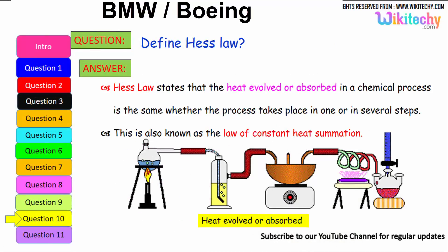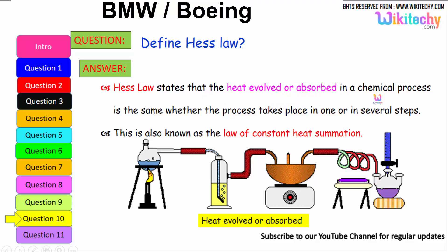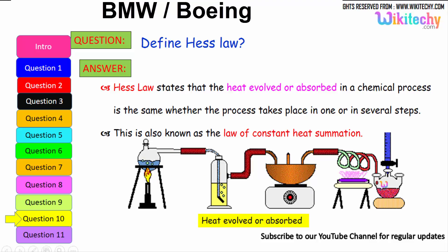Regarding heat generation between an object and emissions: Hess's law states that the heat evolved or absorbed in a chemical process is the same whether the process takes place in one or in several steps. This is also known as the law of constant heat summation.